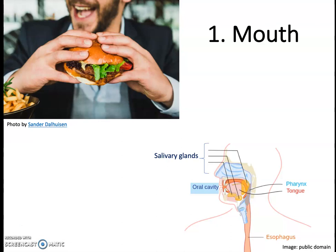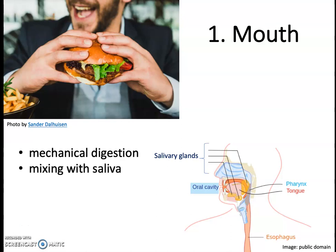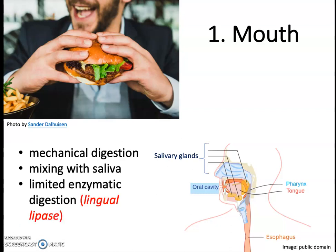As always, we begin the digestive process in the mouth. You take a bite, you start to chew, and that begins to mechanically break down the food into smaller particles. As you chew, you're also adding saliva into the mix, which moistens the food and gets it ready to travel down the esophagus and into the stomach. And there's also a little bit of enzymatic digestion of triglycerides that happens in the mouth.